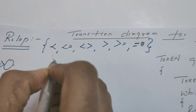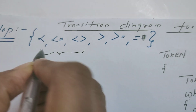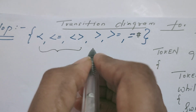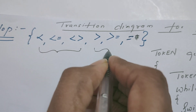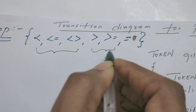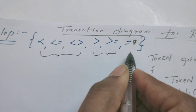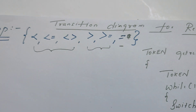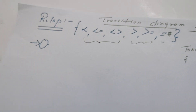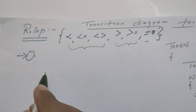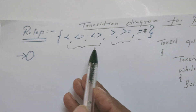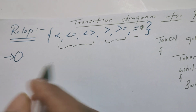I am grouping these three operators together because they begin with a less than symbol. These two operators are grouped because they begin with a greater than symbol, and this equal to operator we treat separately. For this set of relational operators, we are going to draw the transition diagram which recognizes them.